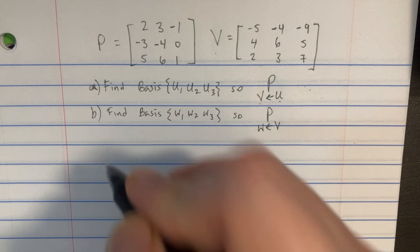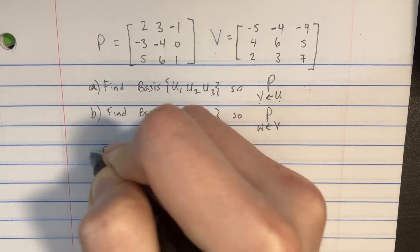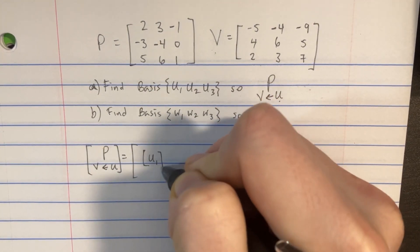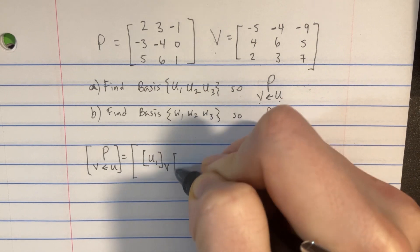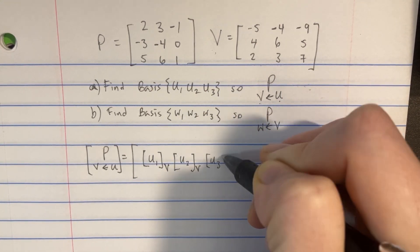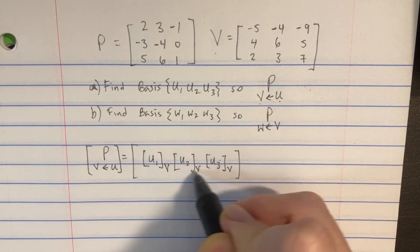So that way, we have this P that becomes U transforming into V. Now, we know that the definition of P, of U going to V, is going to be equal to, essentially, you're going to put a U1 here, and it's basis V, and then a U2 here, basis V, and then I guess we have a U3 here, basis V. So that way, we could take our U's and transform them into V's.